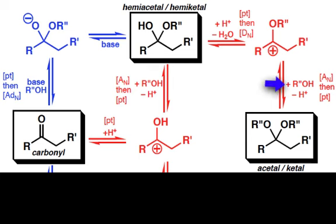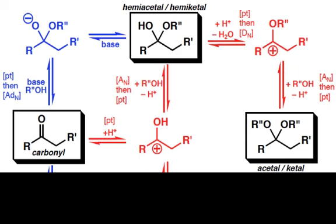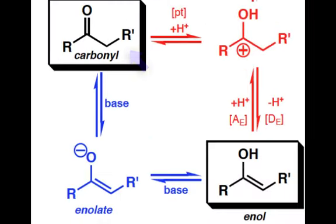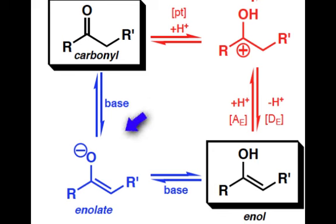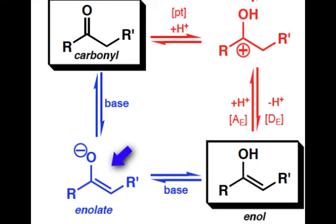Upon addition of a second equivalent of alcohol, we can generate the acetal. Again, keto-enol tautomerization can occur under basic or acidic conditions. The pathway that we studied in the previous webcast was the formation of the enolate species under basic conditions.